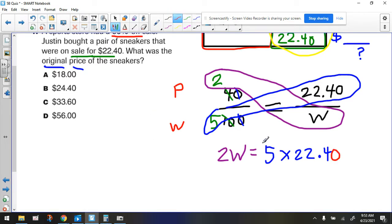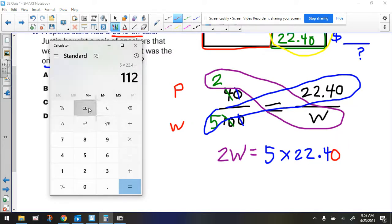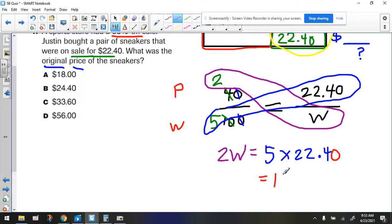Alright, let's take out the trusty calculator because our next step here is to simplify this. We're simplifying, 5 times 22.4. 5 times 22.4. And we get this number, 112. And let's bring down the 2W.